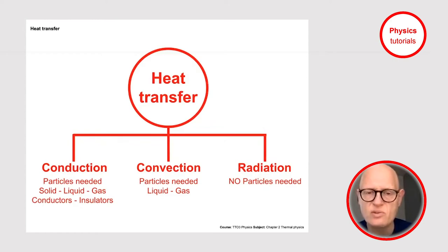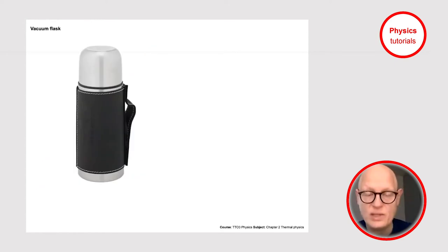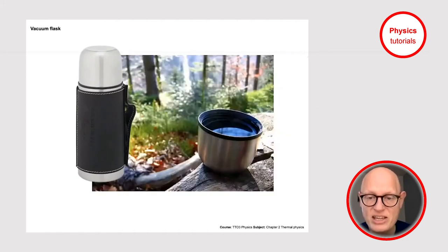Whenever you want to prevent heat transfer from happening, you need to prevent conduction, convection, or radiation. This is what we do when we use a vacuum flask. You can put in a drink to keep it either hot or cold, but mostly it's used to keep drinks hot. Just think of a hiking trip, taking a break and enjoying a nice hot drink.